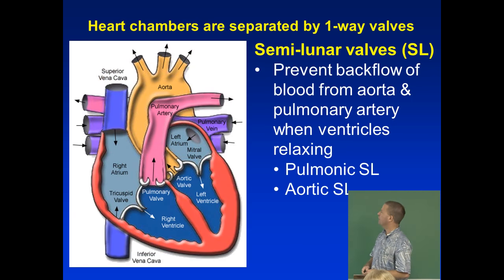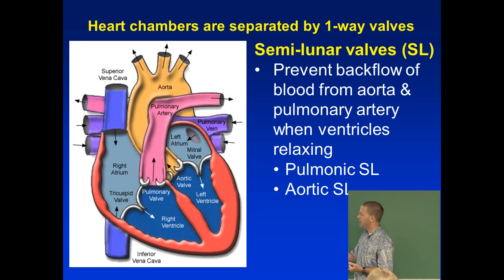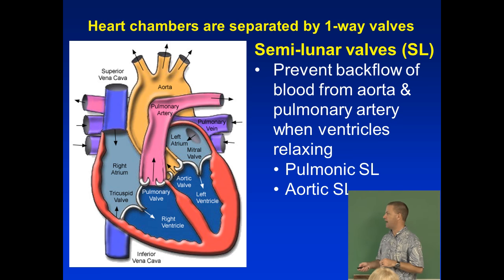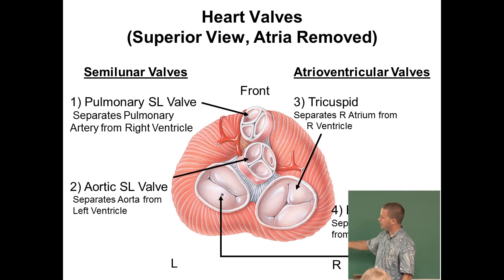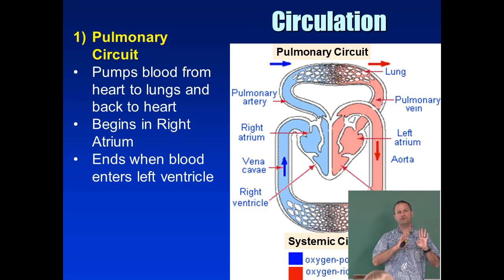We also have semilunar valves, which regulate blood entrance into the great vessels — the pulmonary trunk and the aorta. They allow blood to move up into the vessels when the ventricles contract but prevent backflow when the ventricles relax. We have a pulmonic (pulmonary) semilunar valve and an aortic semilunar valve. 'Semilunar' refers to their half-moon shape.